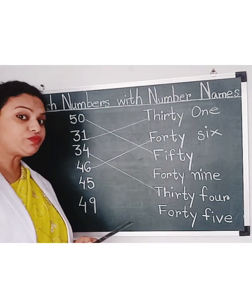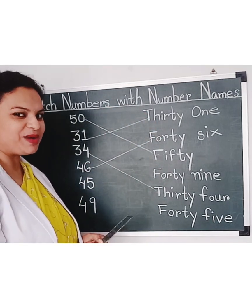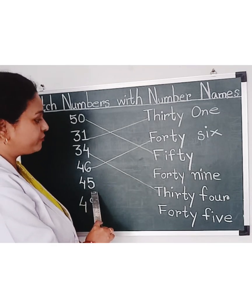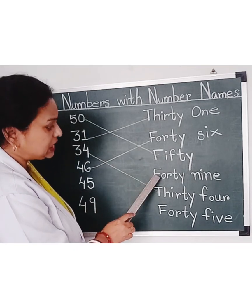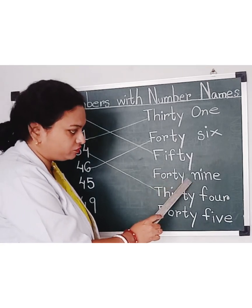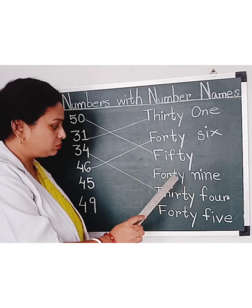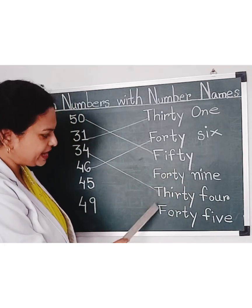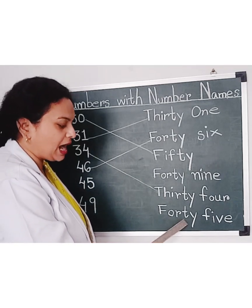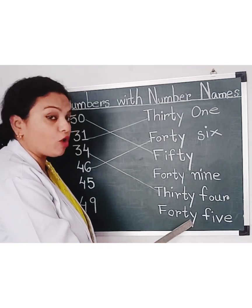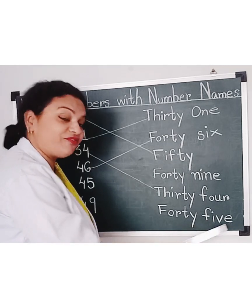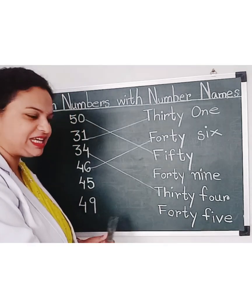Now, let's see which one is the next number. 45. Is this the number name for 45? No. Yes, here it is — F, O, R, T, Y — Forty; F, I, F, T, Y — Forty-Five, 45. Let's match it.